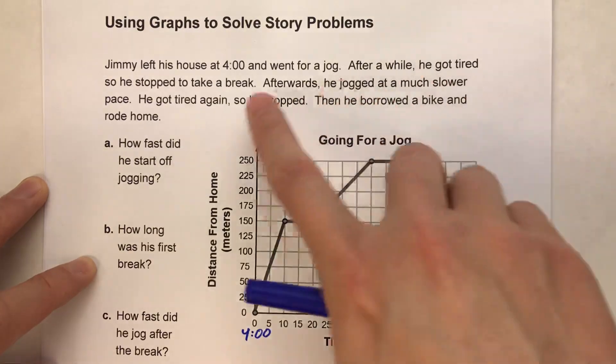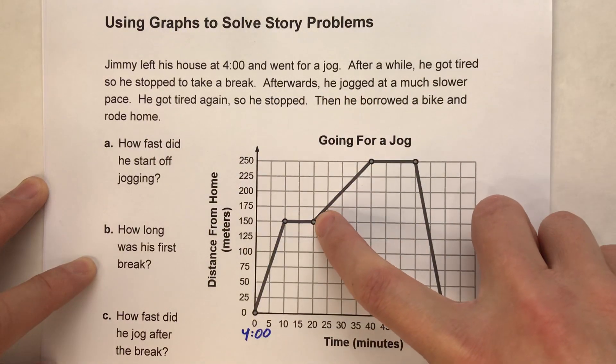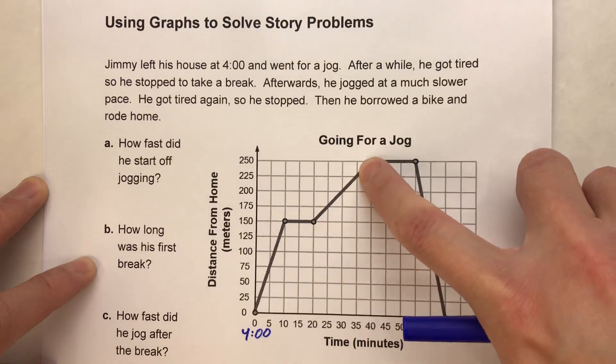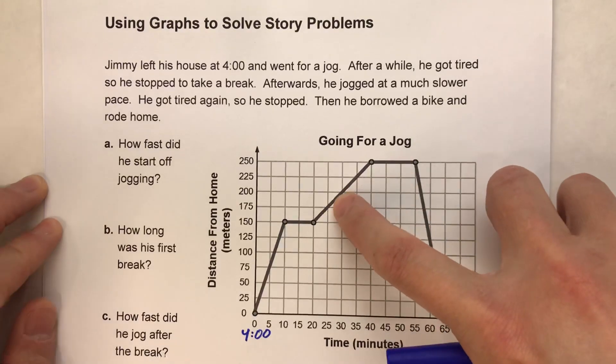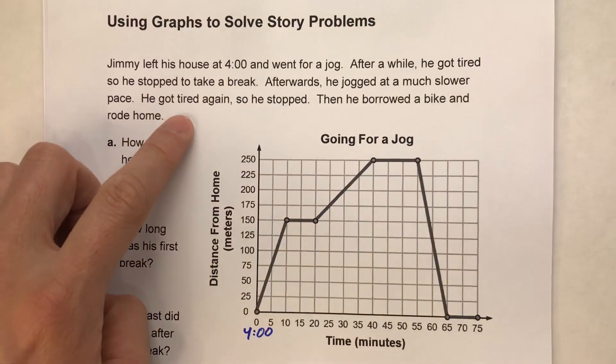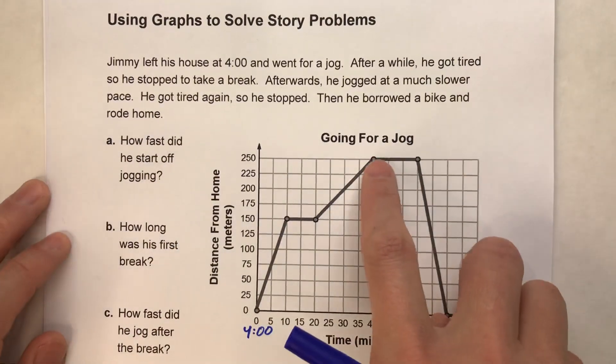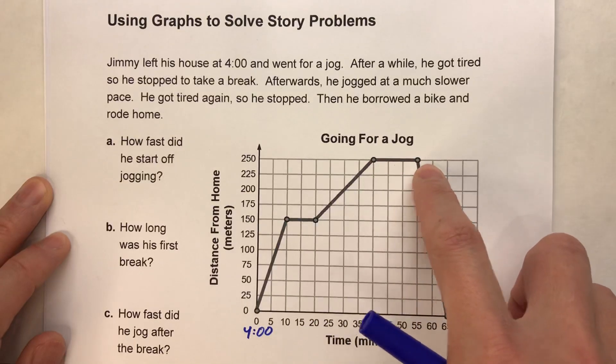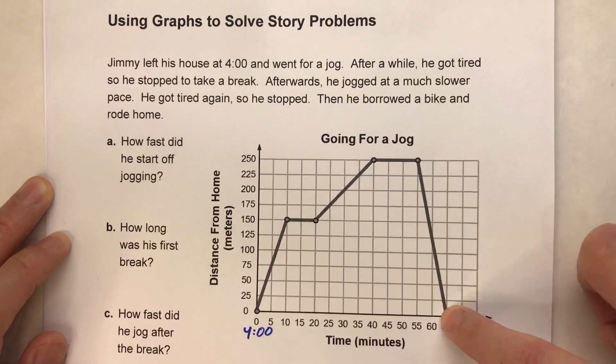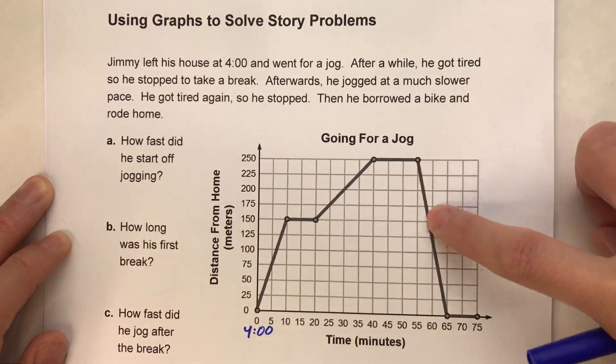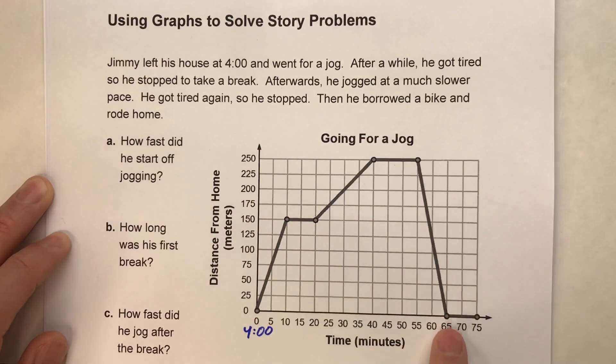Afterwards, he jogged at a much slower pace. So notice, again, after that, he starts making progress again and notice it's much flatter than it was before. So that's him jogging at a slower pace. Then he stopped again. So that's this. And then he borrowed a bike and rode home. And notice, now he's going back towards home because his distance from home is decreasing. And that's when he got home right there.